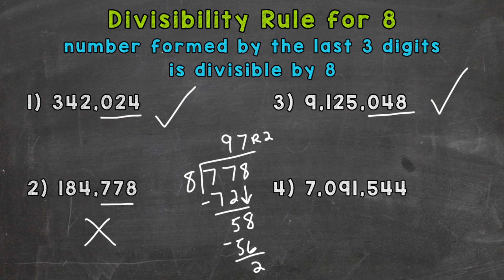Now lastly, number 4, we have 7,091,544. So our last three digits here, 544. I'm not sure off the top of my head, so let's do a quick division problem off to the side here.